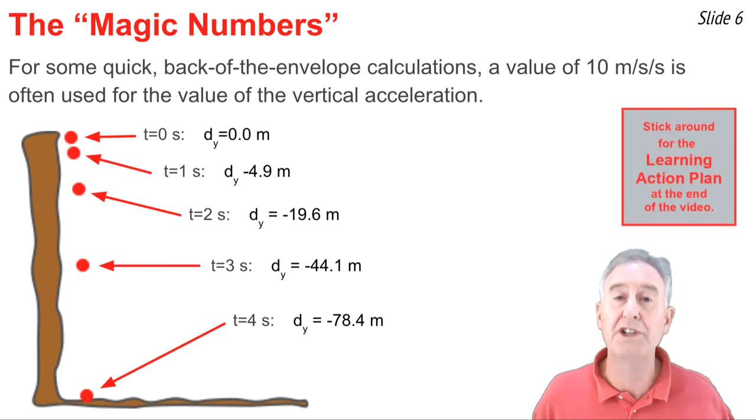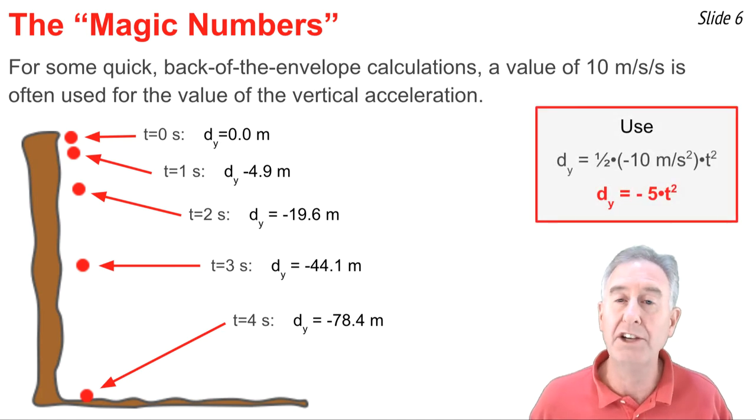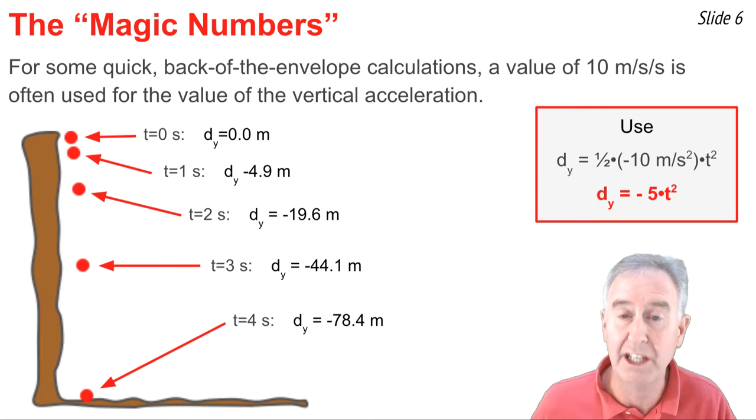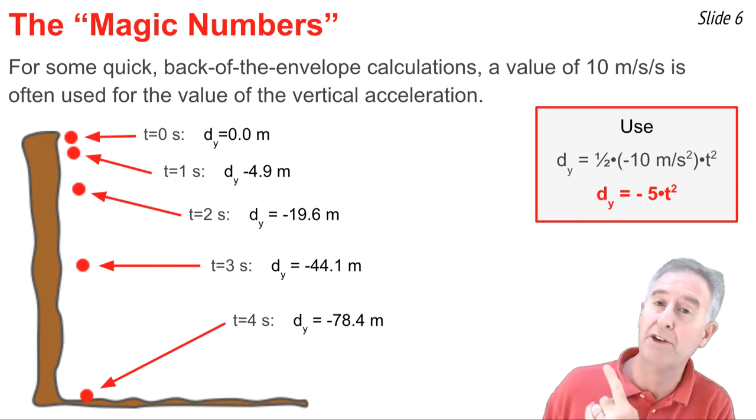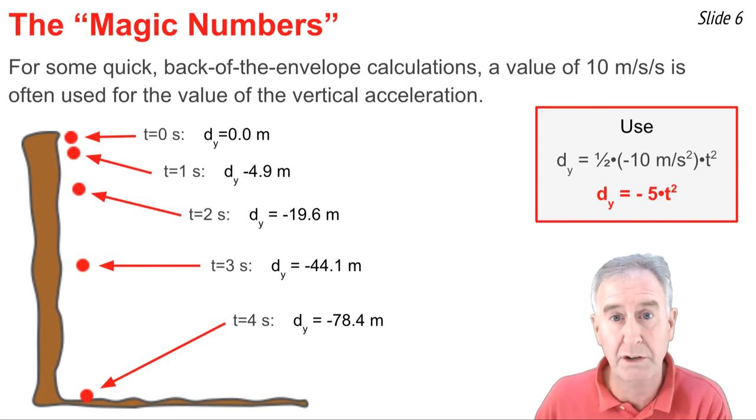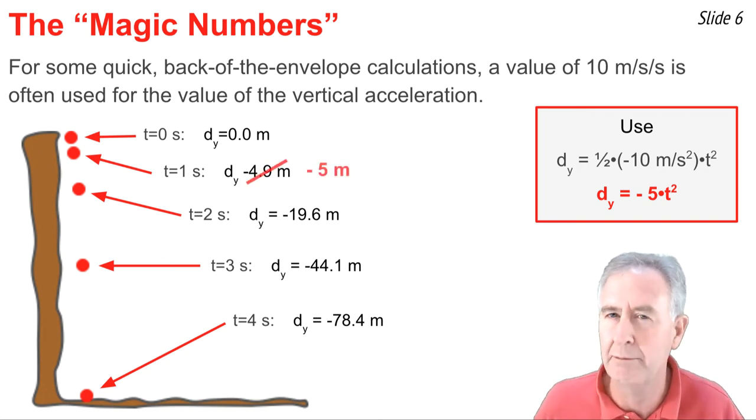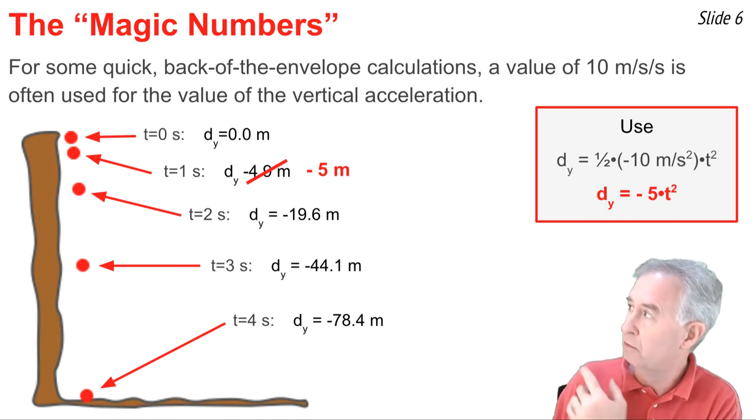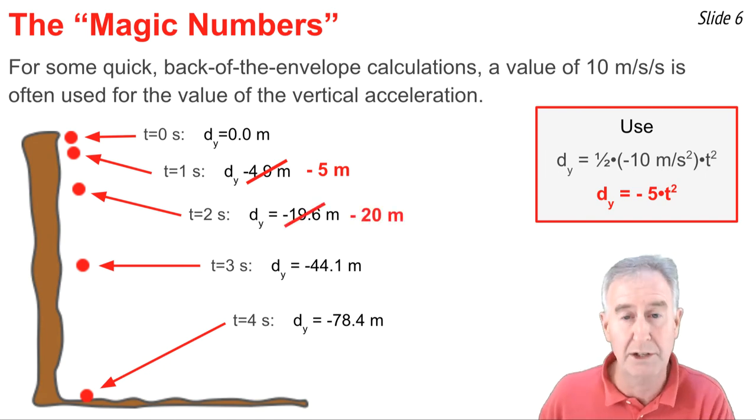So here's the results of the calculations we just did for the vertical displacement of a projectile. But for some quicker back-of-the-envelope style calculations, we often use an a_Y value of negative 10 m/s². That causes this kinematic equation to turn into d_Y = ½ × -10 × t², or simply negative 5t². We can use this equation with values of one second, two seconds, three seconds, four seconds to recalculate these vertical displacements. We'll get approximate values, but we'll get them much more quickly. What we would see for one second is a displacement of negative five meters, two seconds, negative 20 meters, three seconds, negative 45 meters, and four seconds, negative 80 meters.